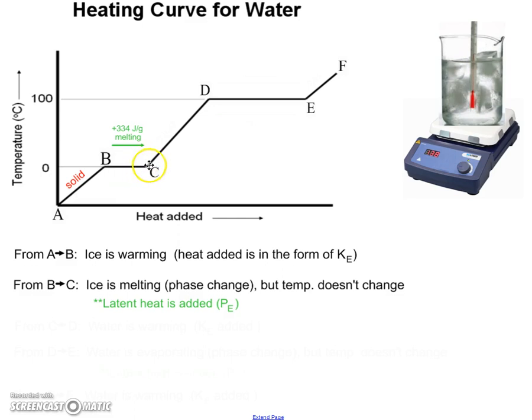Once we reach point C now you see the temperature starts to go up again. Now we're above zero degrees Celsius. So now we're dealing with a liquid. And the liquid is getting warmer from point C all the way to point D. Because it's getting warmer, molecules are moving faster. And so it's getting heat in the form of kinetic energy.